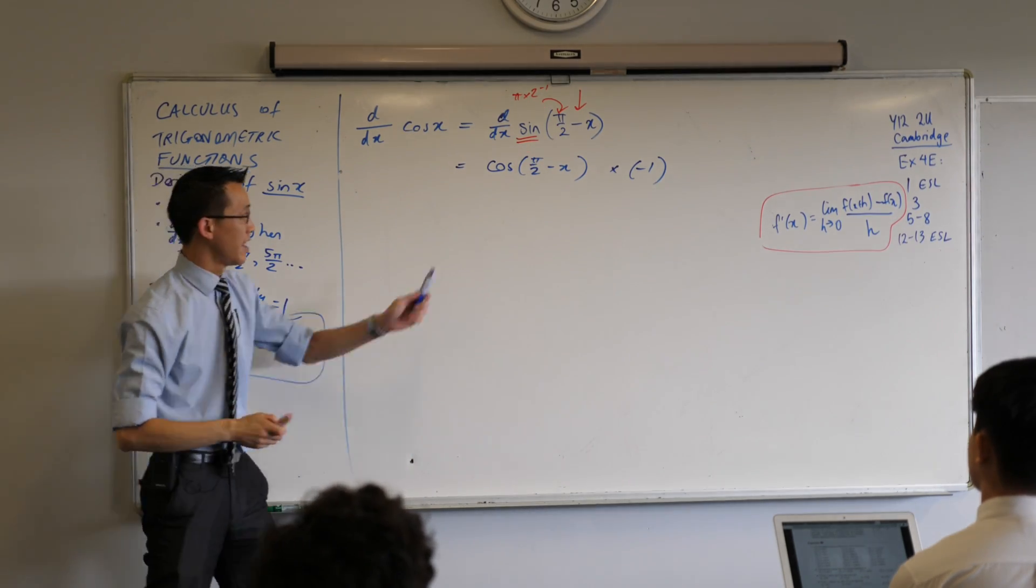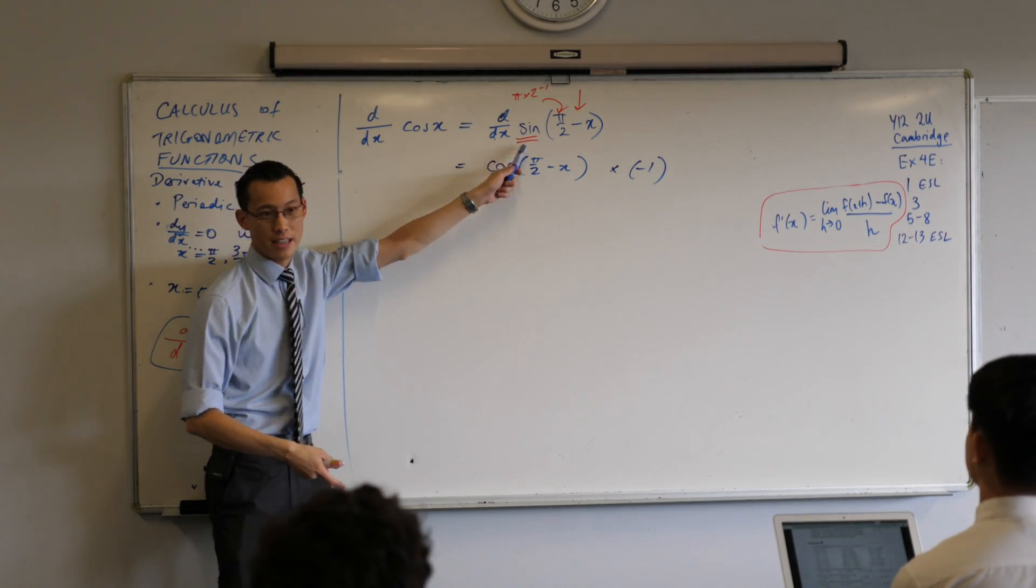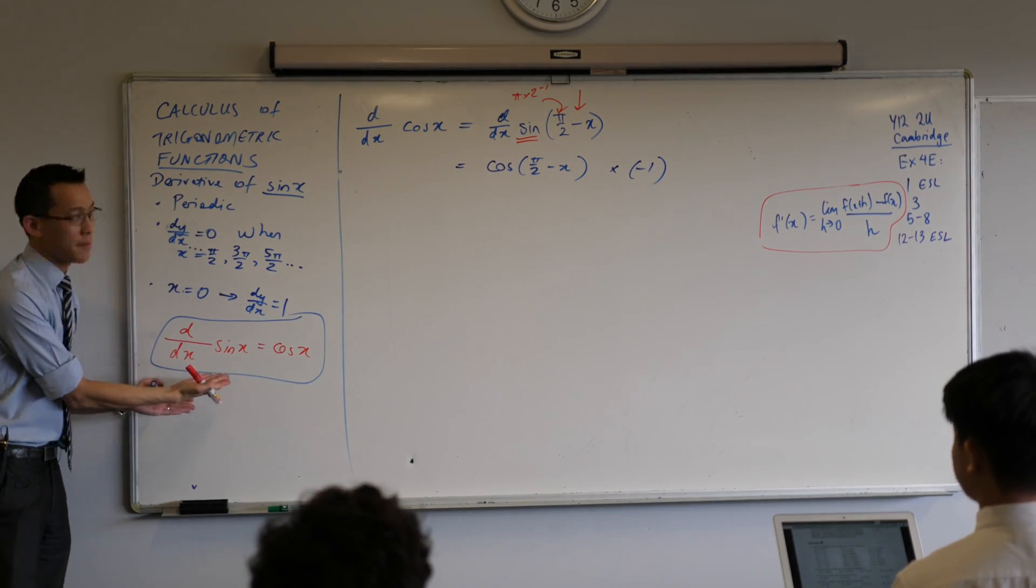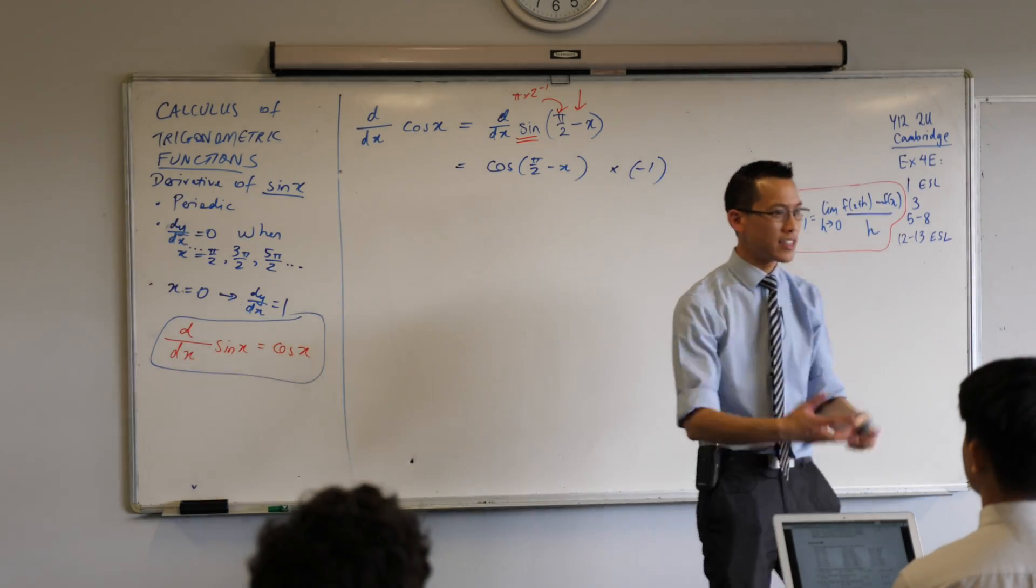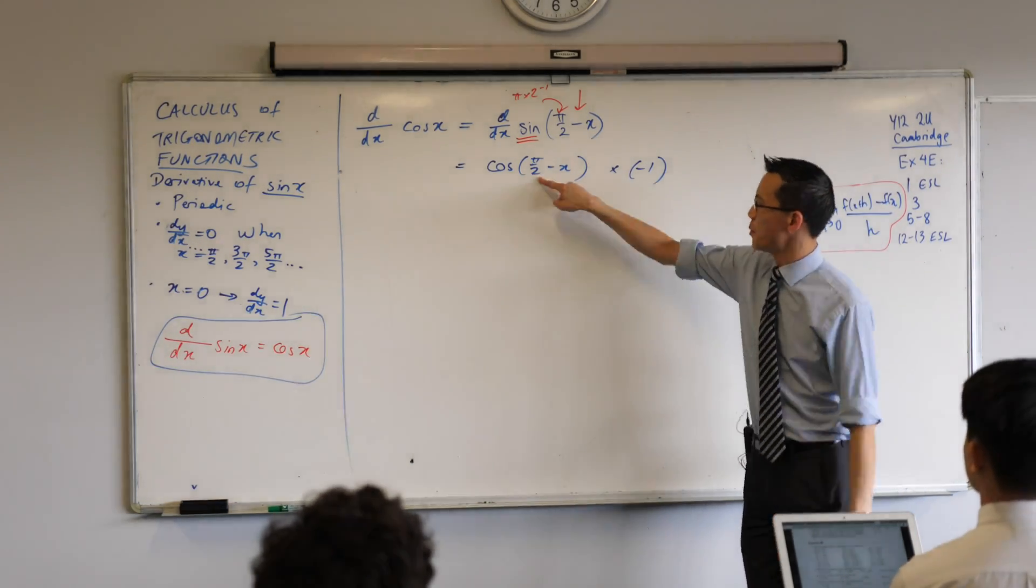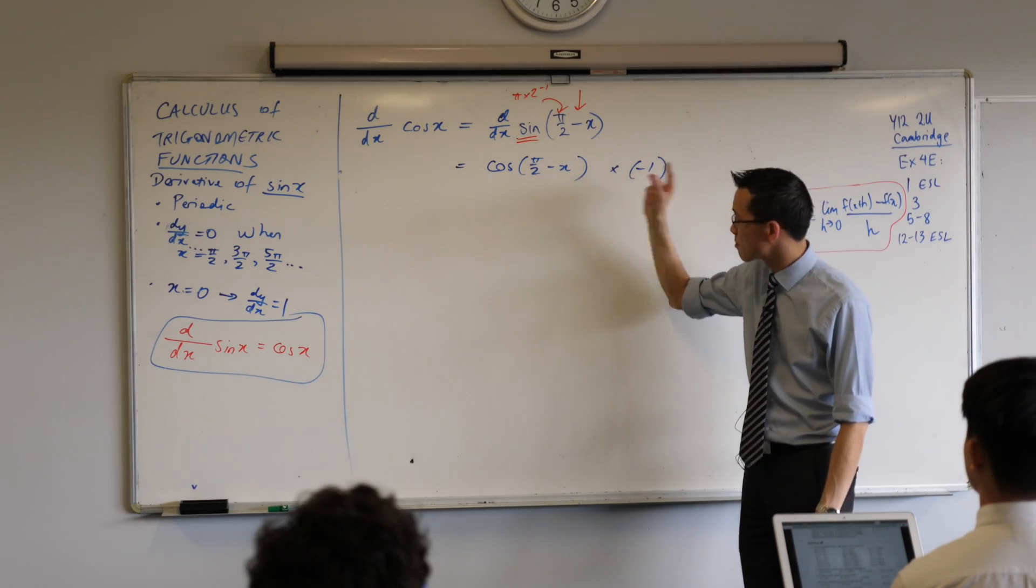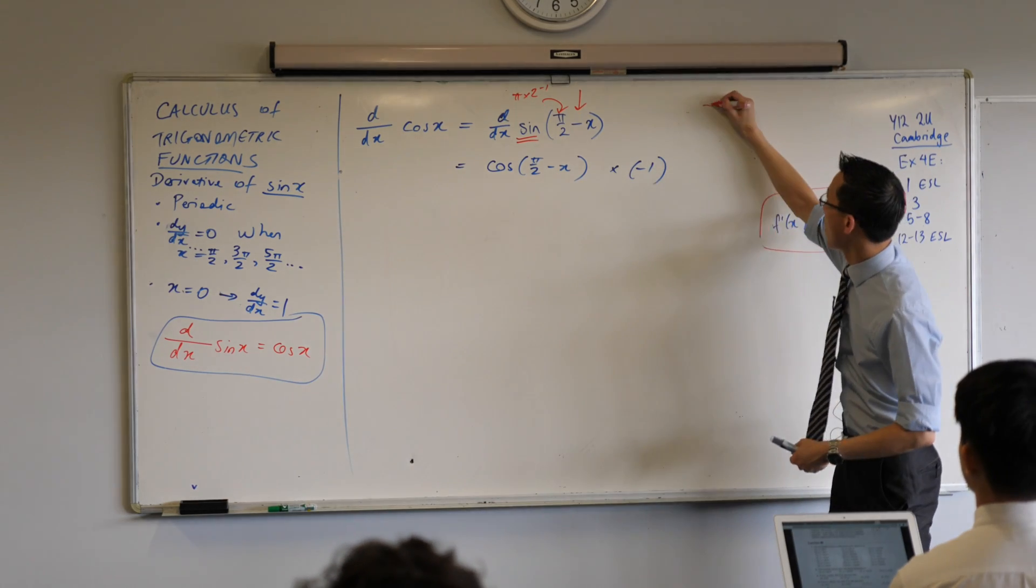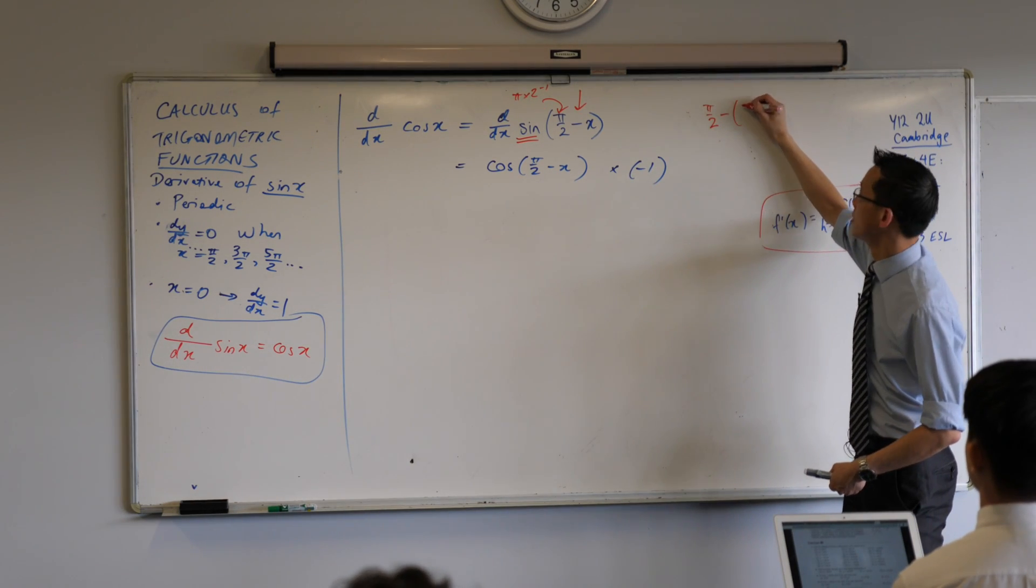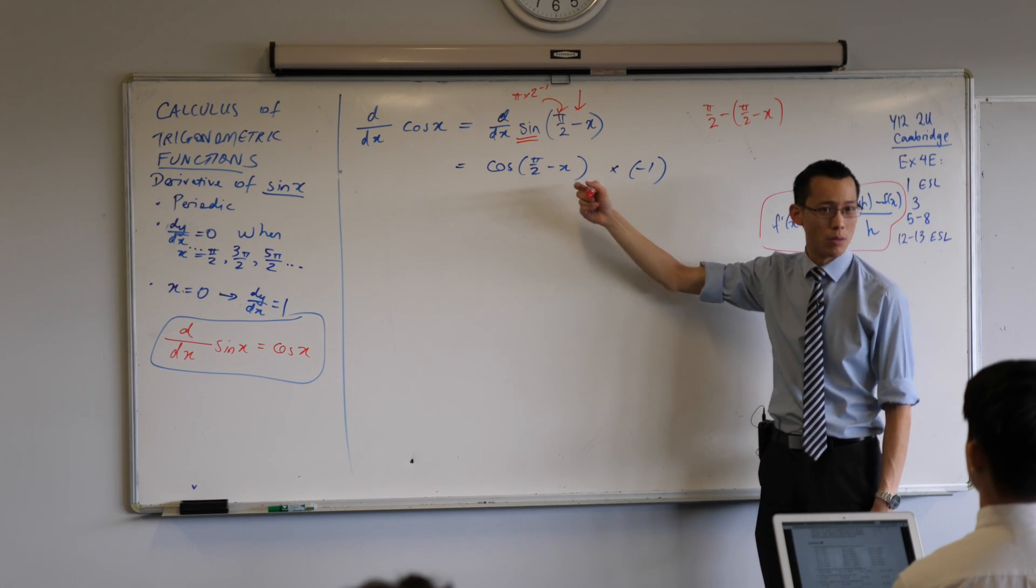Now, we're almost done here, right? This thing here, this pi on 2 minus x, we introduced it so we could turn things in terms of something I know about, right? But we can use that same fact about cosine as a complement. What's the complement of this? Pi on 2 minus that. What would that be? Pi on 2 minus pi on 2 minus x. That's the complement of a complement. What would that be?